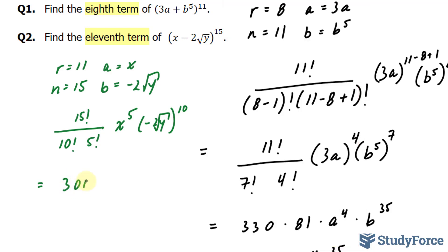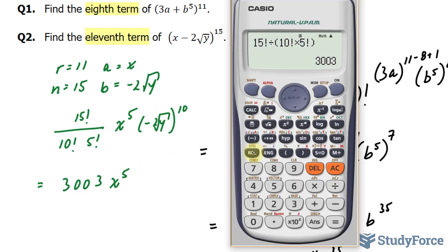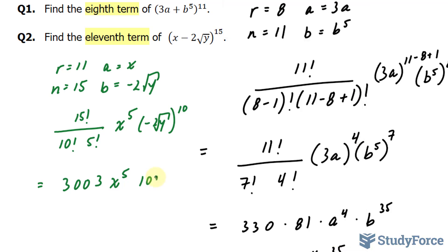3,003 x to the power of 5. This part, we have negative 2 to the power of 10 gives us 1024. And y square root is y to the power of half times 10 is y to the power of 5.